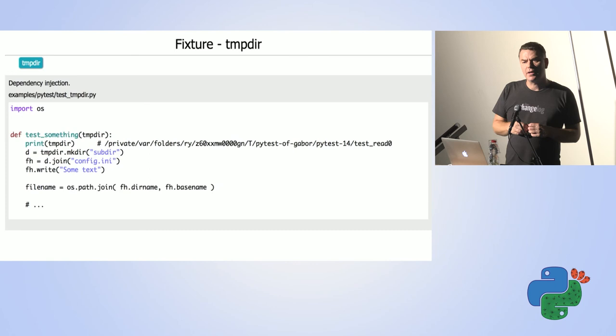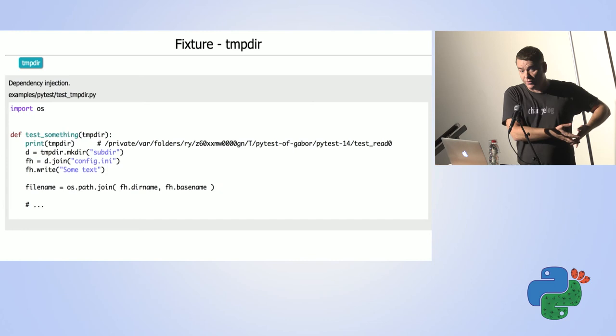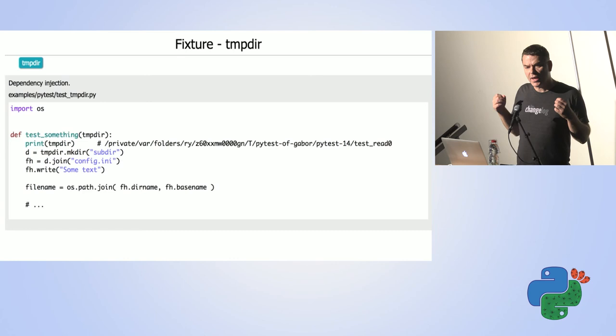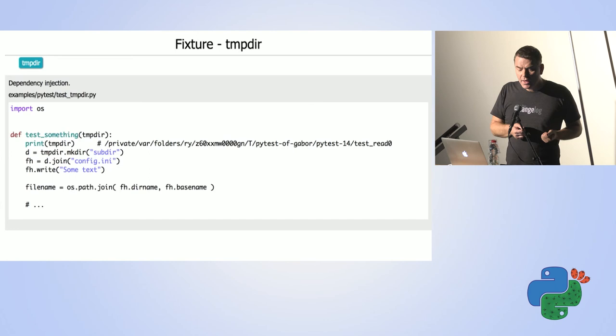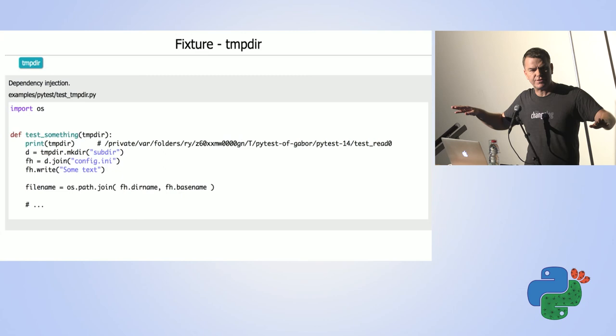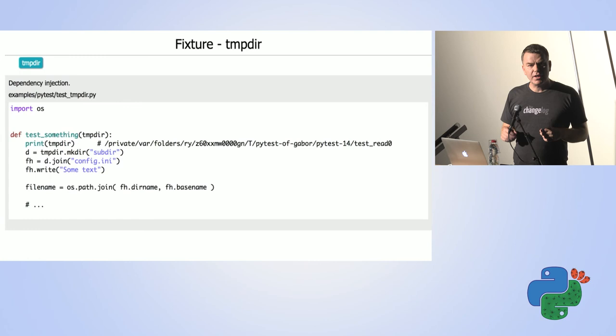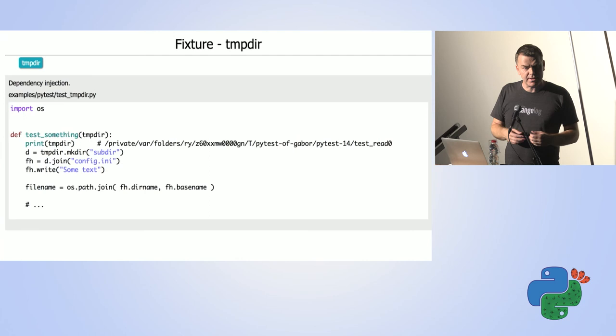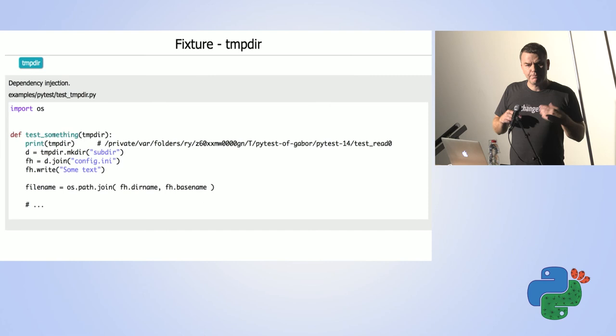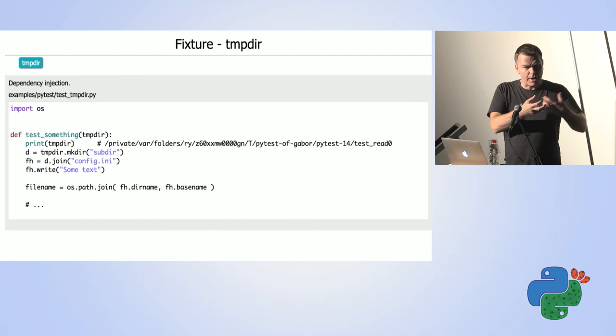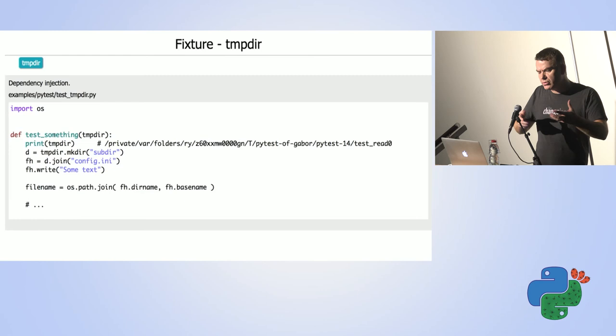PyTest also has things it calls fixtures — mostly tools that help you set up the environment. One of them is 'tmpdir'. It provides a temporary directory where your application can save data so two tests won't interact with each other. When you declare your test function, you say you're expecting 'tmpdir' to be passed to it. PyTest sees this, prepares a temporary directory object, and passes it into your test function. This is called dependency injection.